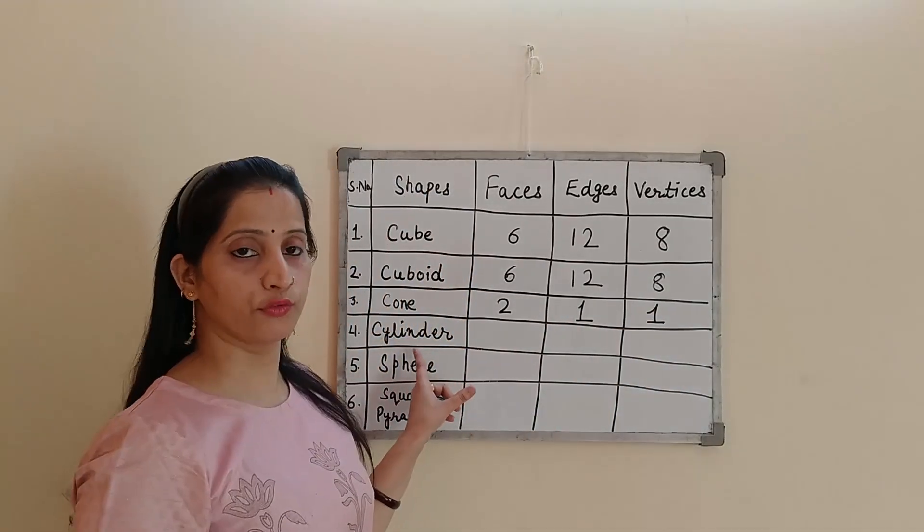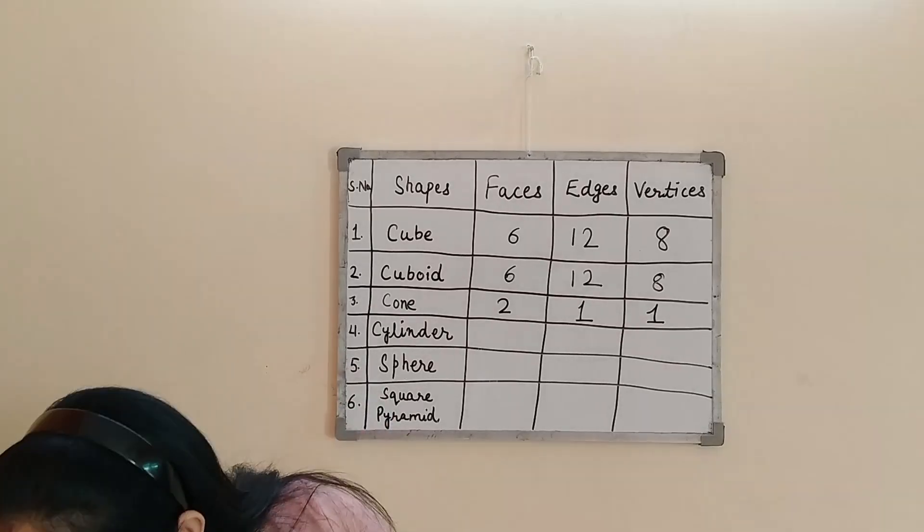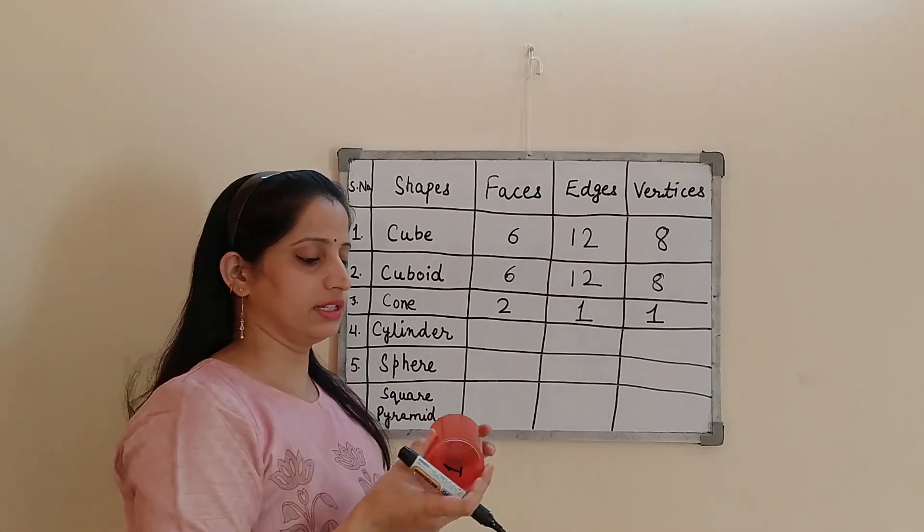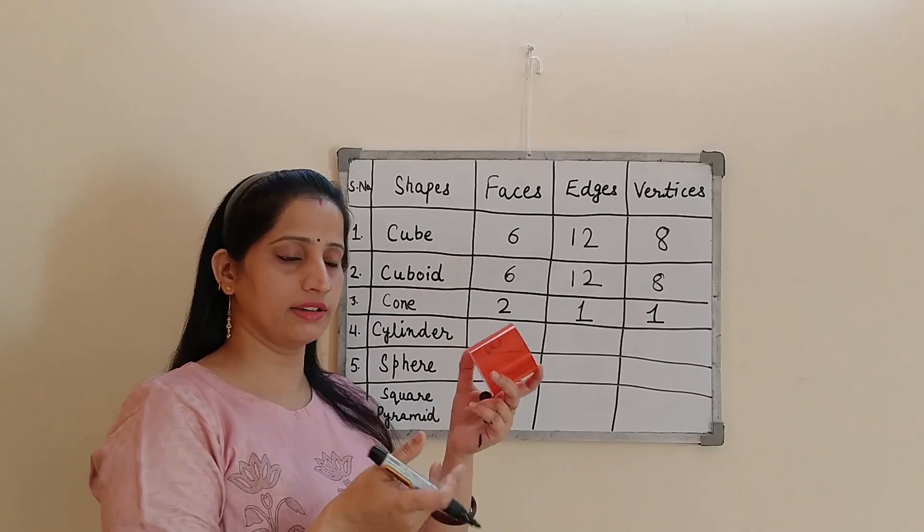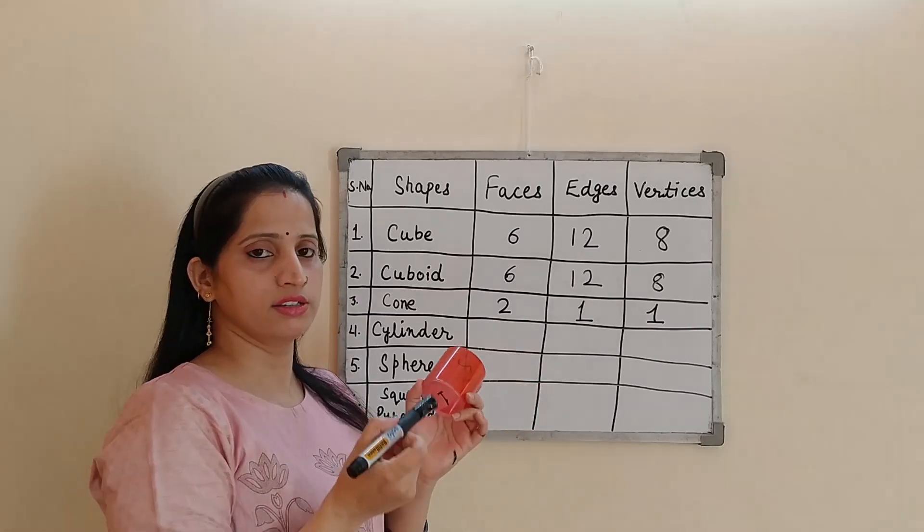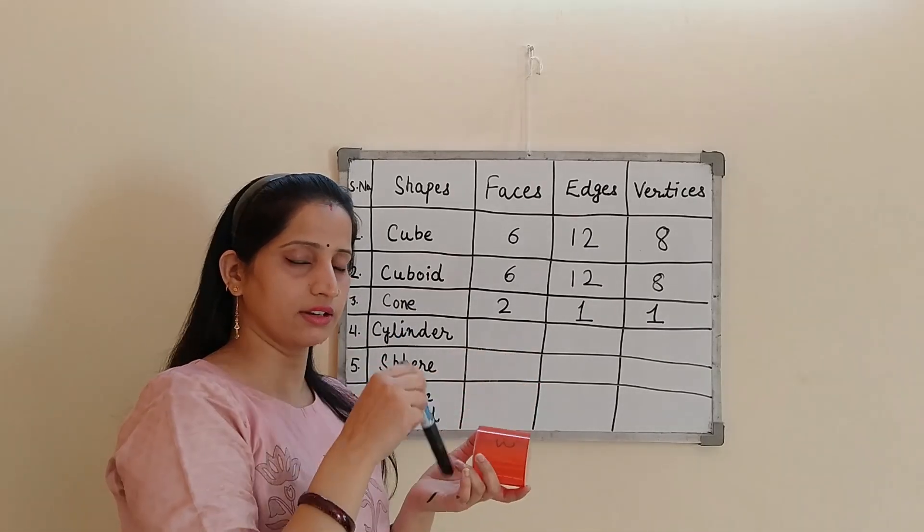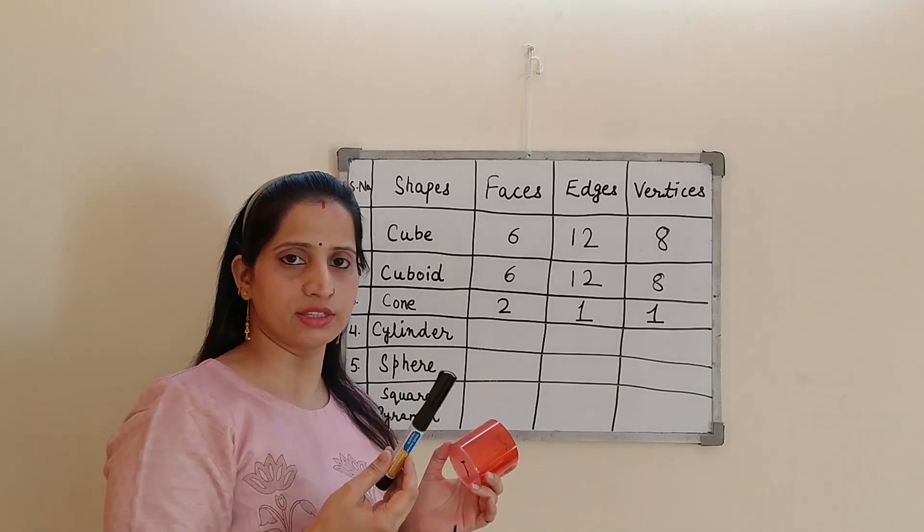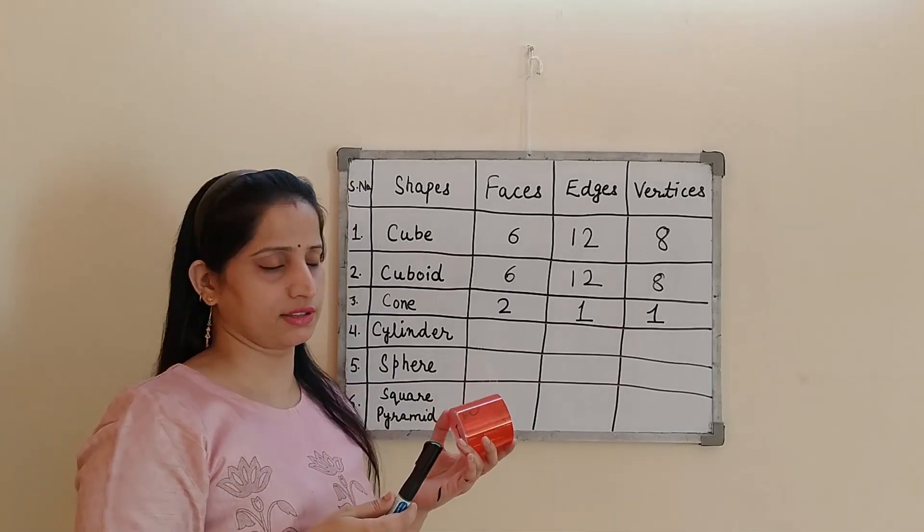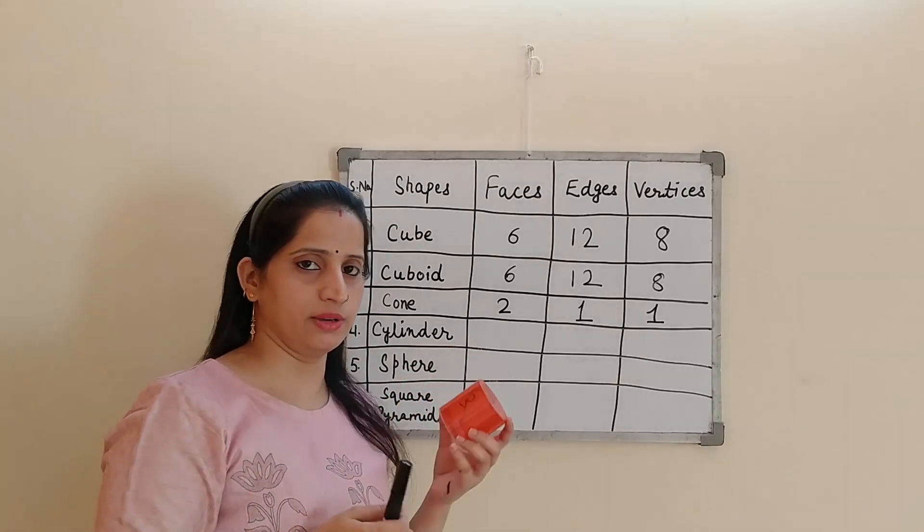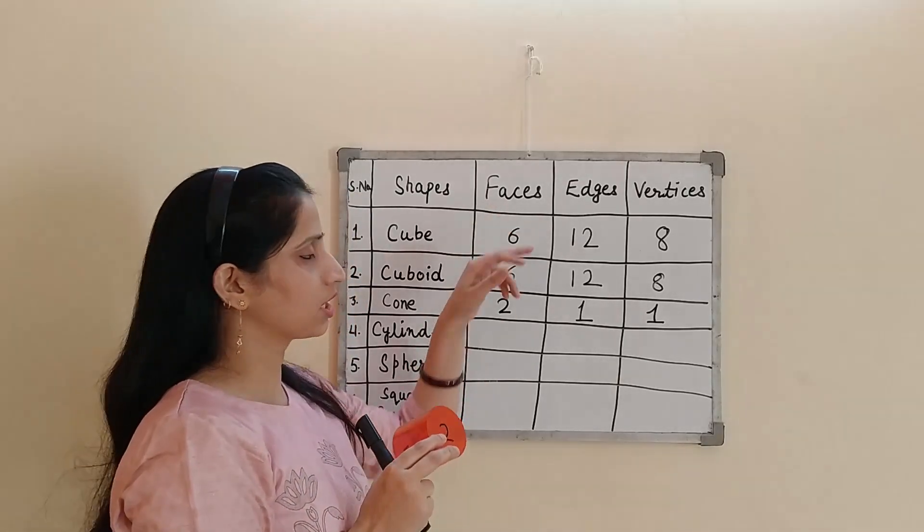Now, we will talk about the fourth 3D shape. It is a cylinder. I am having a cylindrical shape in my hand. See, this marker is also an example of cylinder. Chalk, you can see. Pencil, pen. So many things that are cylindrical in shape.